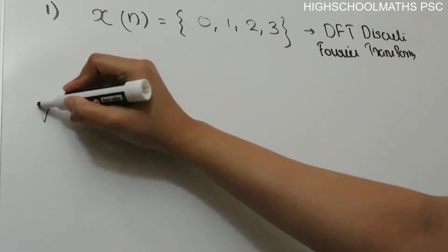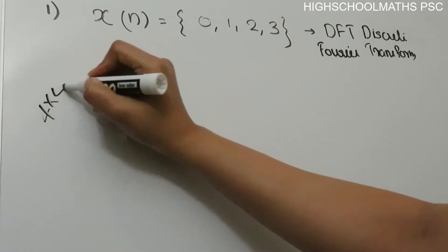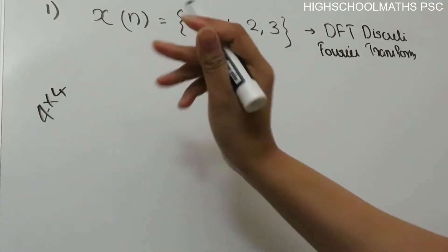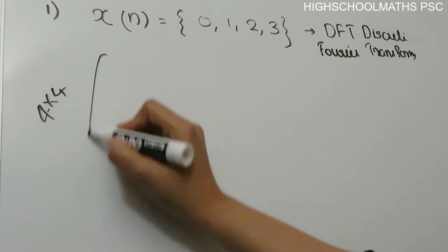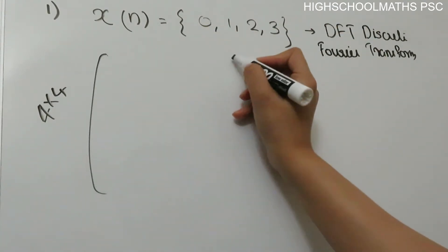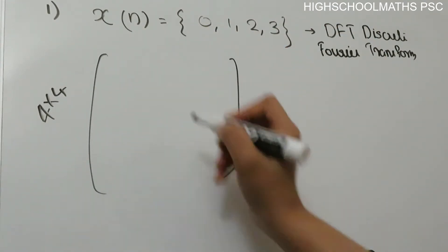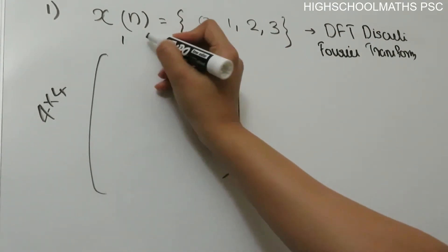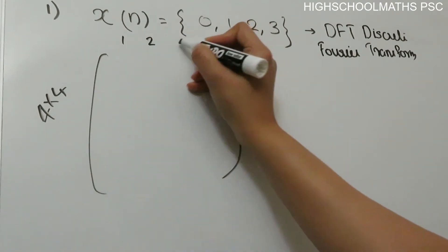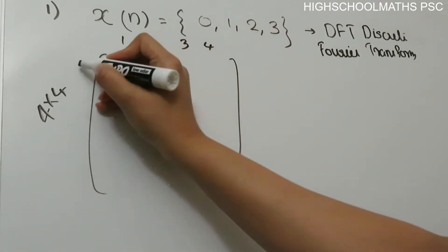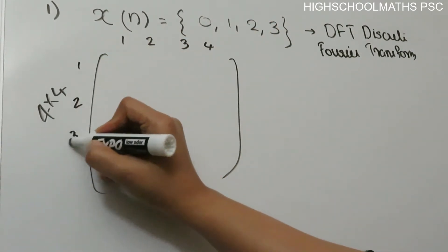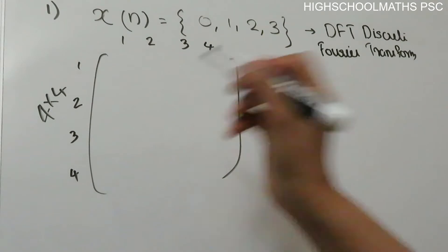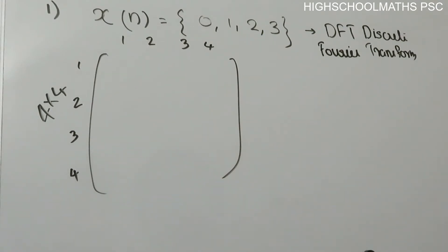What is the 4x4 matrix? It has 4 rows and 4 columns. We now have the matrix with 4 columns: 1, 2, 3, 4, and 4 rows.